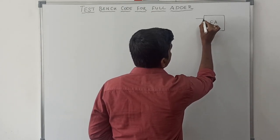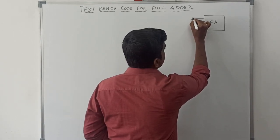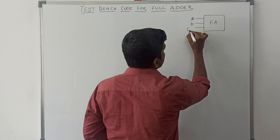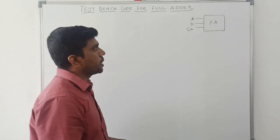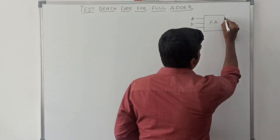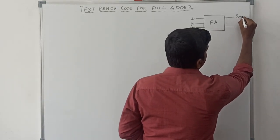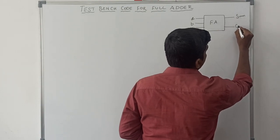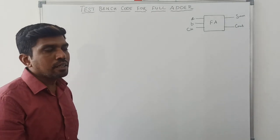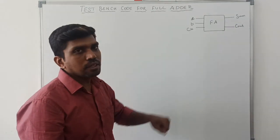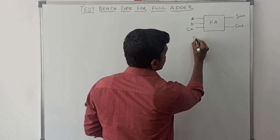In this full adder circuit it has three inputs: A, B, and C-in. These three variables are the input variables. The full adder circuit produces two outputs — one called sum and another called C-out. C-out represents carry output and C-in represents carry in. Now I am going to write the truth table.